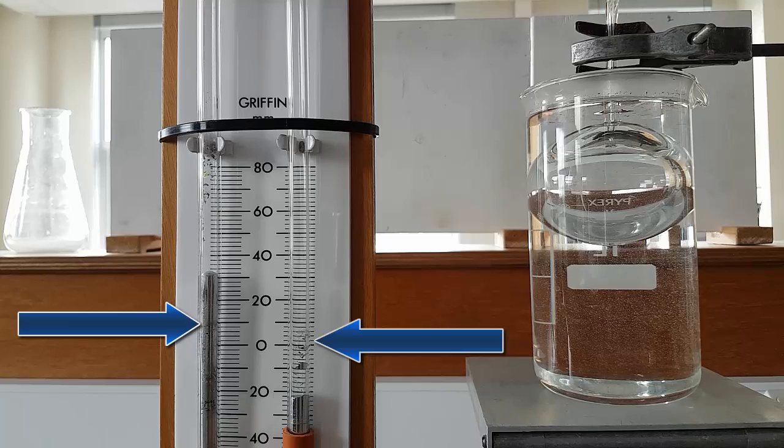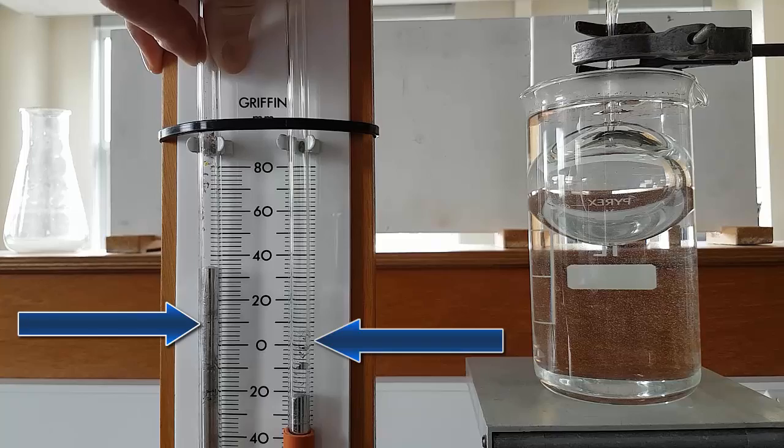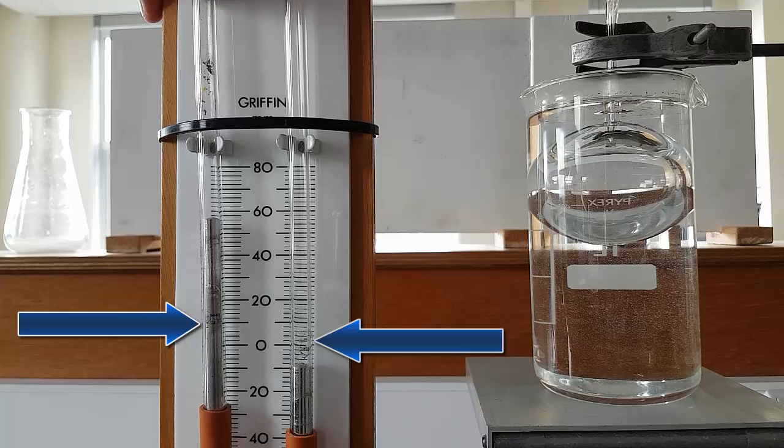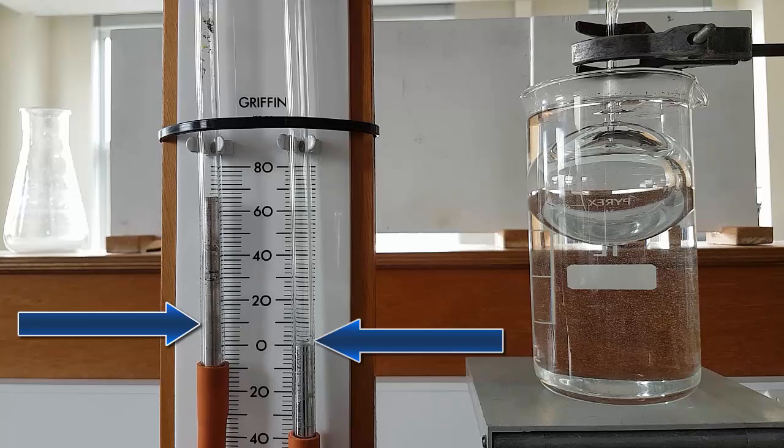That's happening now, and when it gets to the level that it started at, we can see on the left-hand side the height difference of the mercury. From that we can calculate the new pressure that the gas is under at the same volume.